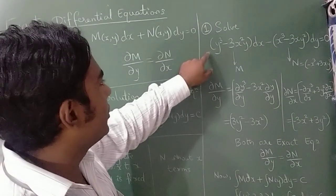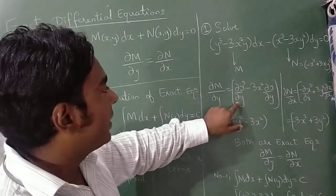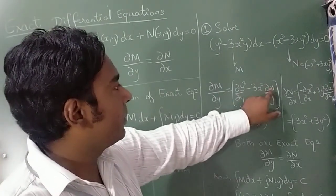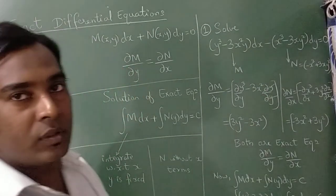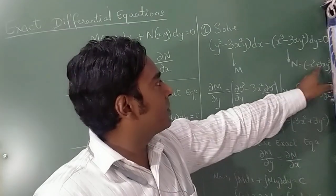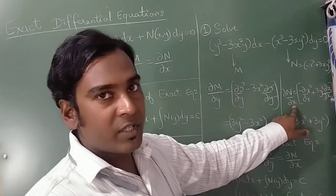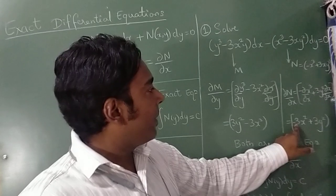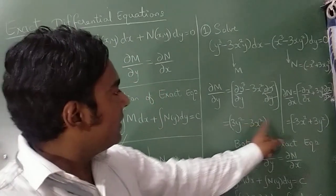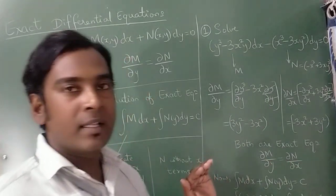Differentiating M with respect to y: d/dy of y³ is 3y², and 3x² is constant so it remains, giving 3y² - 3x². Taking the minus sign inside N: -x³ + 3xy². Differentiating N with respect to x: -x³ becomes -3x², and 3y² remains, giving -3x² + 3y². Both ∂M/∂y and ∂N/∂x are equal, so this is an exact equation.